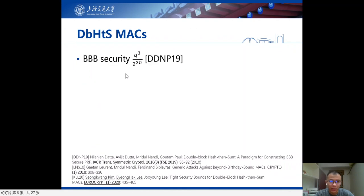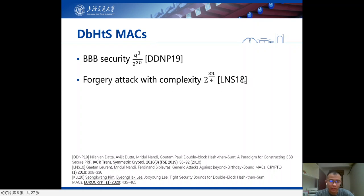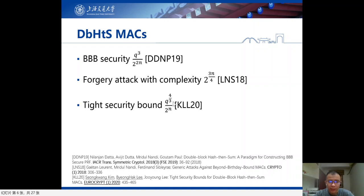Let's briefly recall the recent results for the DBH MACs. Data et al. proved that this generic framework can achieve beyond-birthday bound security of q to the power 3 over 2 to the power 2n. And Leurent et al. proposed a forgery attack on these MACs with complexity 2 to the power 3n over 4. So there is a gap between the provable bounds and the attack complexity. Recently, this gap was closed and a tight security bound was proved for this class of DBH MACs: q to the power 4/3 over 2 to the power n. At this stage, the story of the DBH MACs seemed reasonably complete.